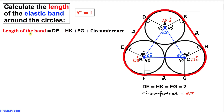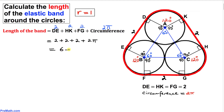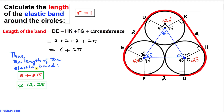Finally, the total length of the band is DE + HK + FG + circumference = 2 + 2 + 2 + 2π = 6 + 2π. The total length of the elastic band is 6 + 2π units, which is approximately 12.28 units. Thanks for watching, and please don't forget to subscribe to my channel for more exciting videos.